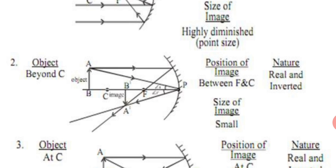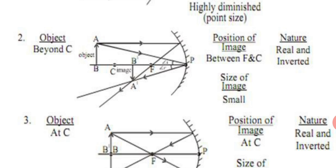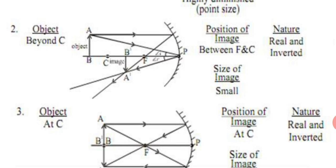Now we talk about second situation: when object is placed beyond C. When object is placed beyond center of curvature, according to rules, rays parallel to principal axis go through focus, and one ray reflects from pole making equal angles. Where these two lines meet, image forms B dash A dash. Nature wise real and inverted, position between focus and C, and size of image is smaller than object.